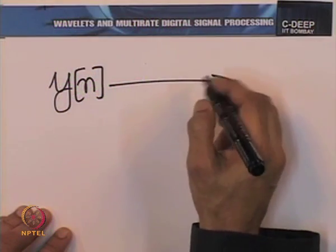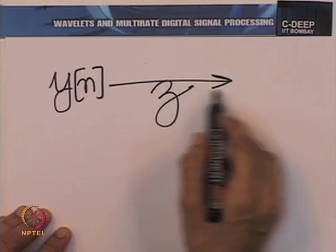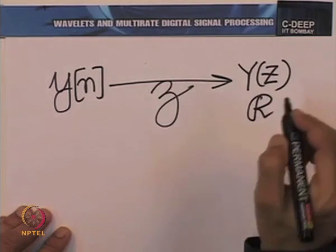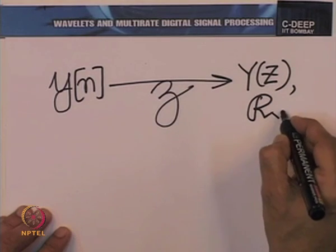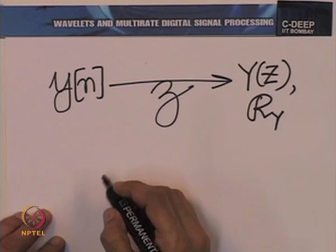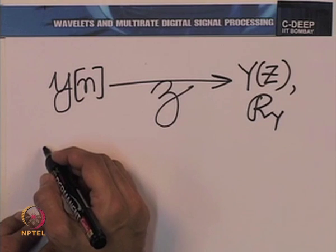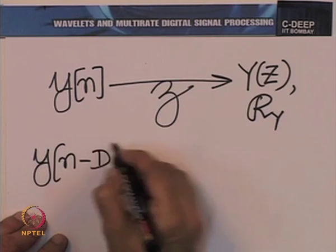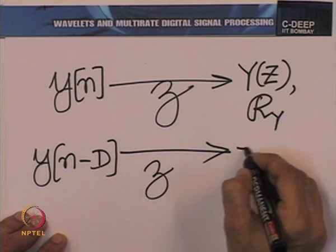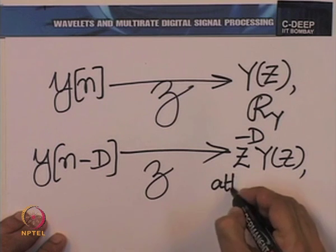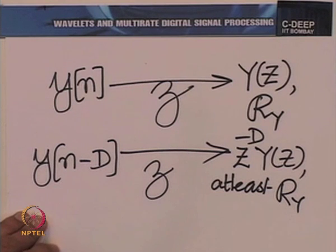If y(n) has the Z-transform — we shall denote this relationship using the script Z symbol — what we mean is that y(n) has the Z-transform given by Y(z) with region of convergence R_Y. Then y(n − d) has the Z-transform given by z raised to the power minus d, times Y(z). The region of convergence is at least R_Y, if not more — sometimes the region of convergence might expand a little beyond R_Y.